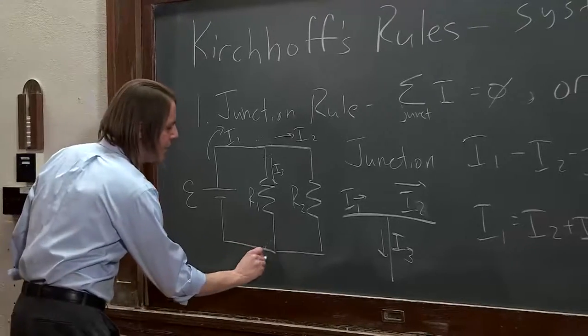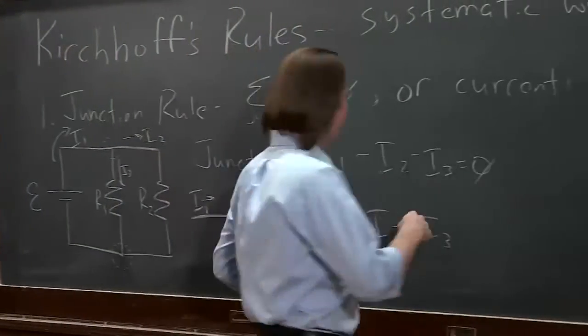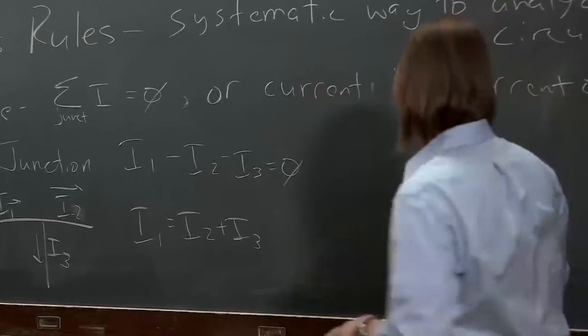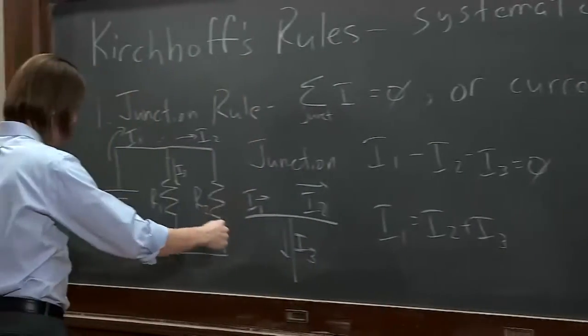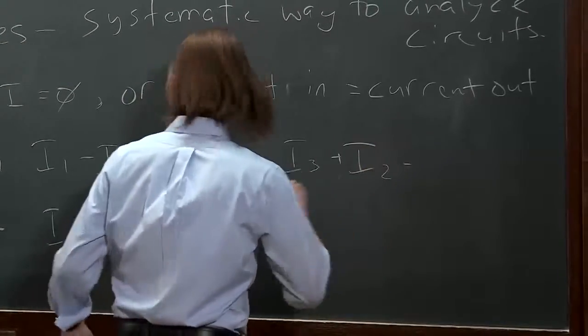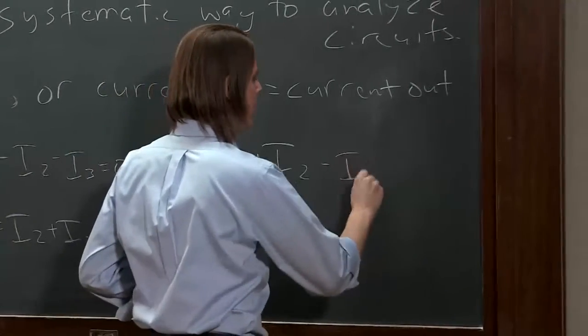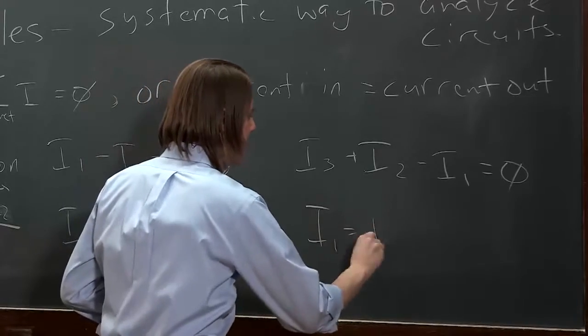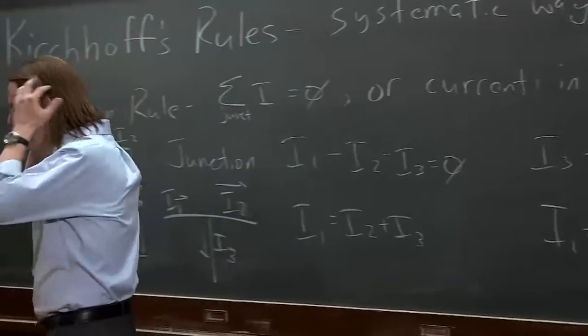We can even look at this other junction and apply the same thing. Here we would have, I3 is going in, and I2 is going in, plus I2. And I1 is coming out, minus I1. Those equal zero. But if you solve this for I1, you get the same thing. In this simple circuit, you're not surprised. But this actually illustrates something, and that is that you can't apply Kirchhoff's rules just to everything. You will over-determine your system.